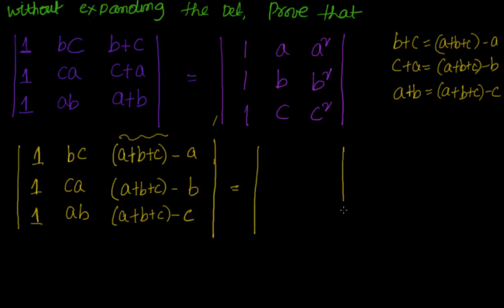Now by the property of determinants, I can write this matrix into two determinants. These two columns are untouched, so they will remain as it is. Here also I will have 1,1,1, BC, CA, AB.